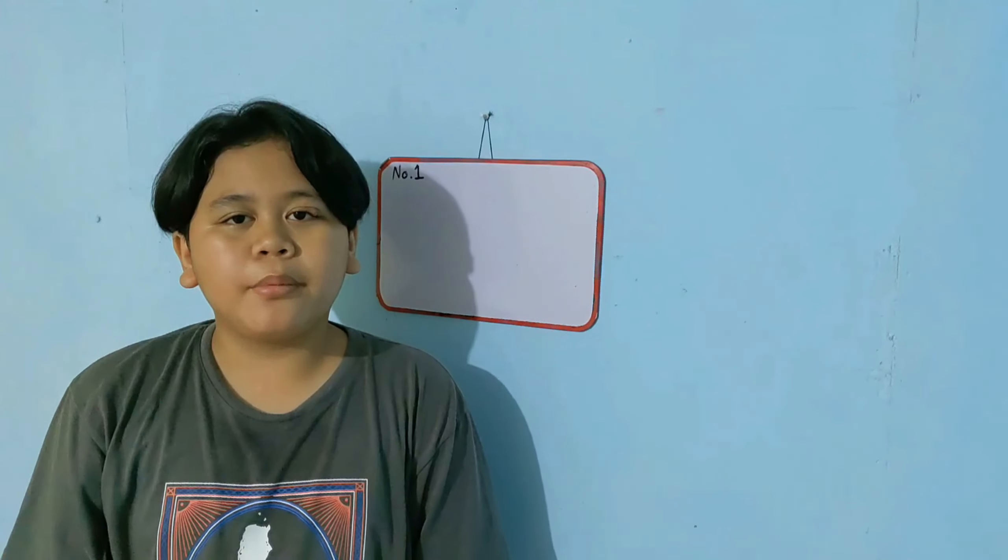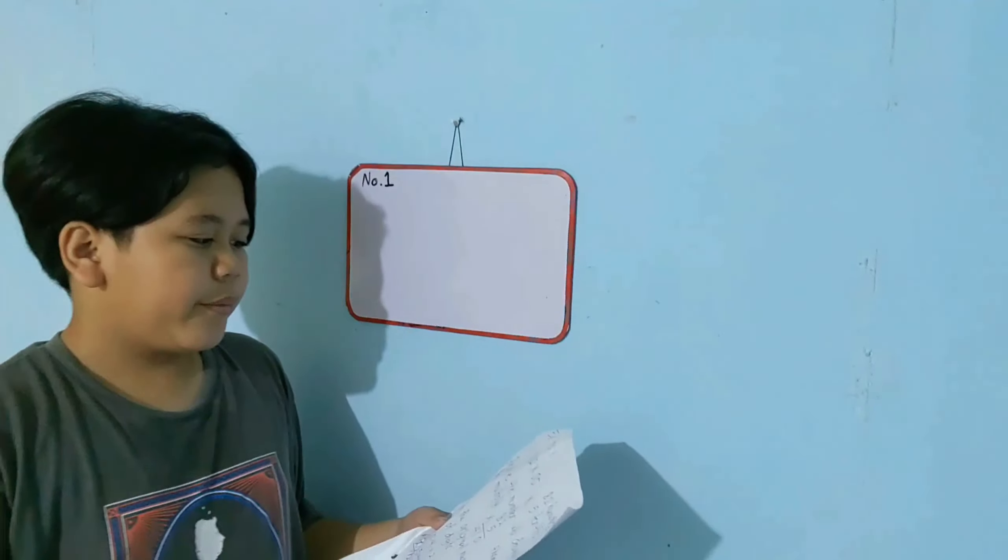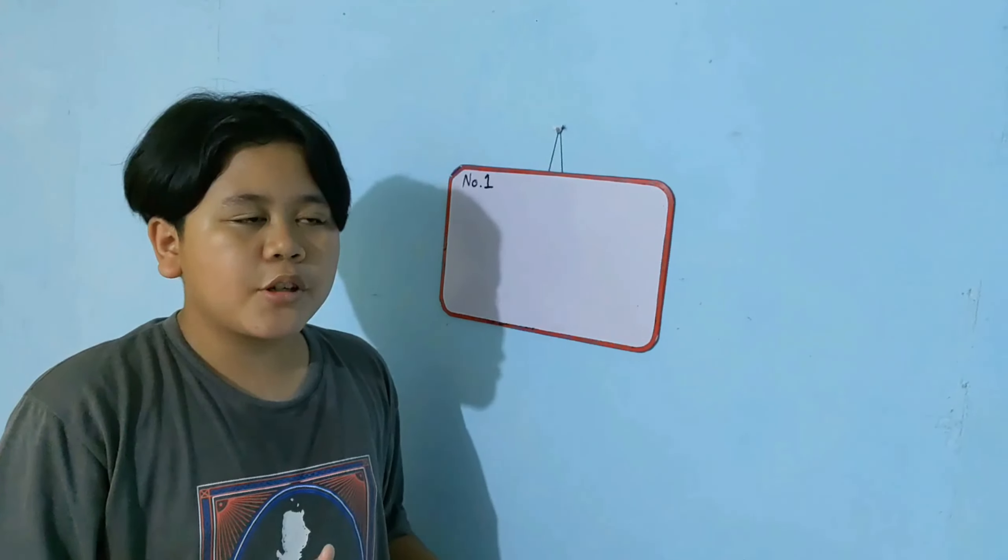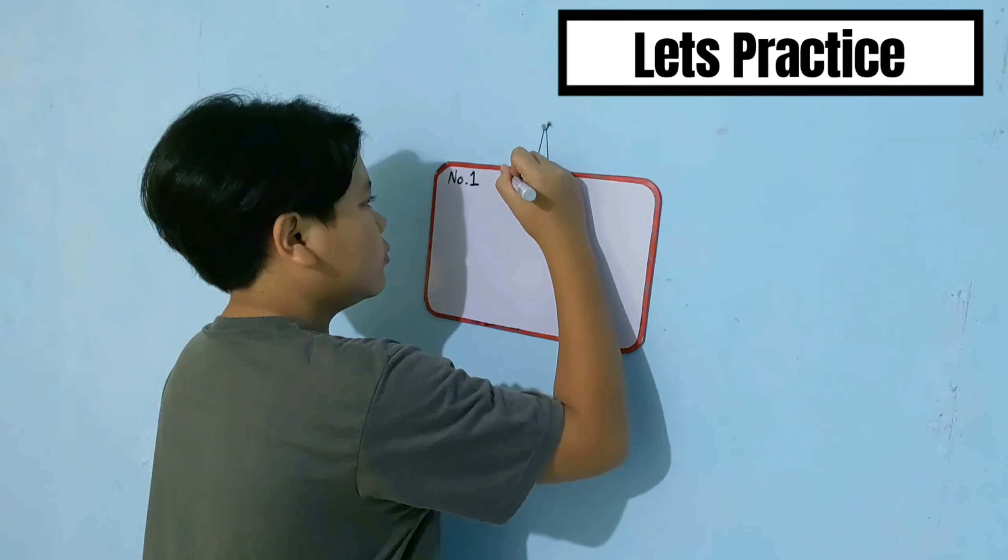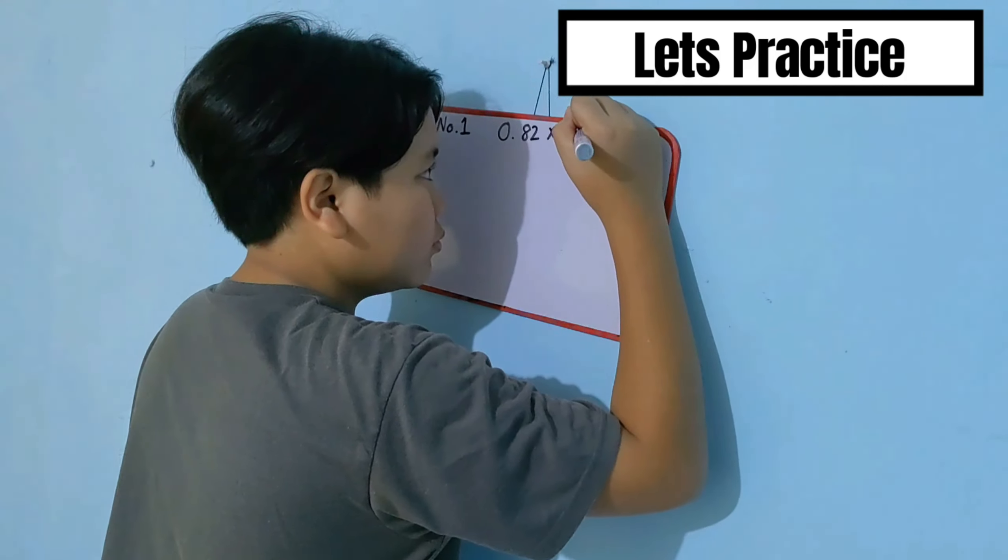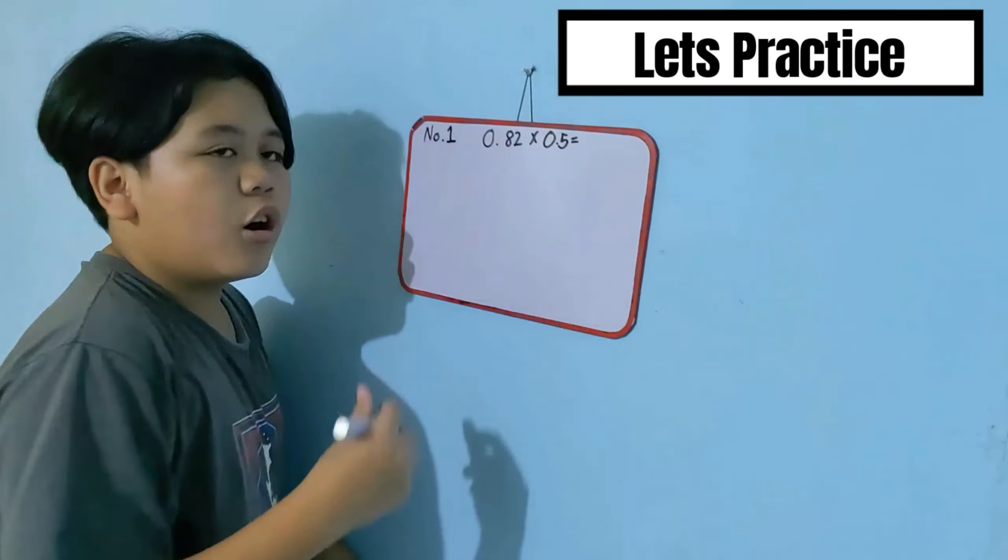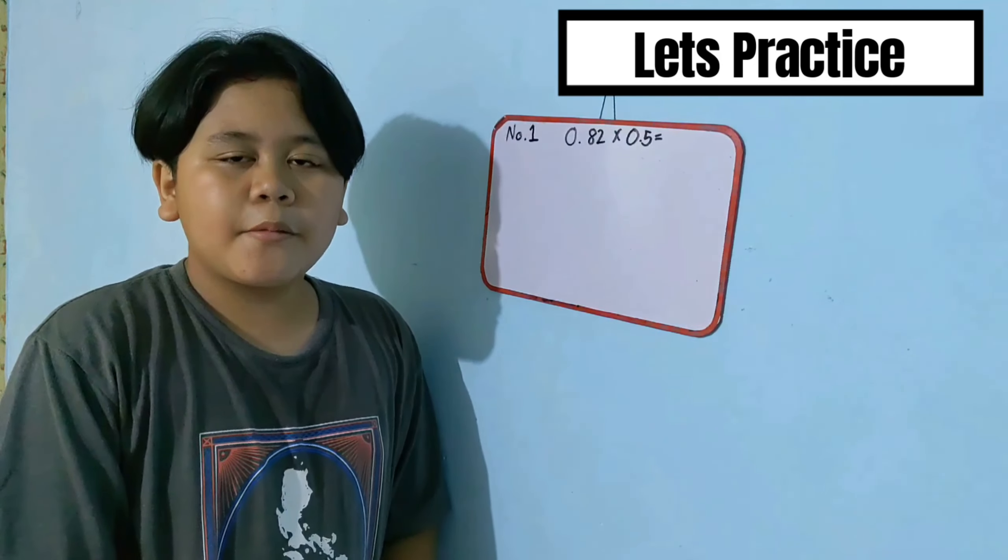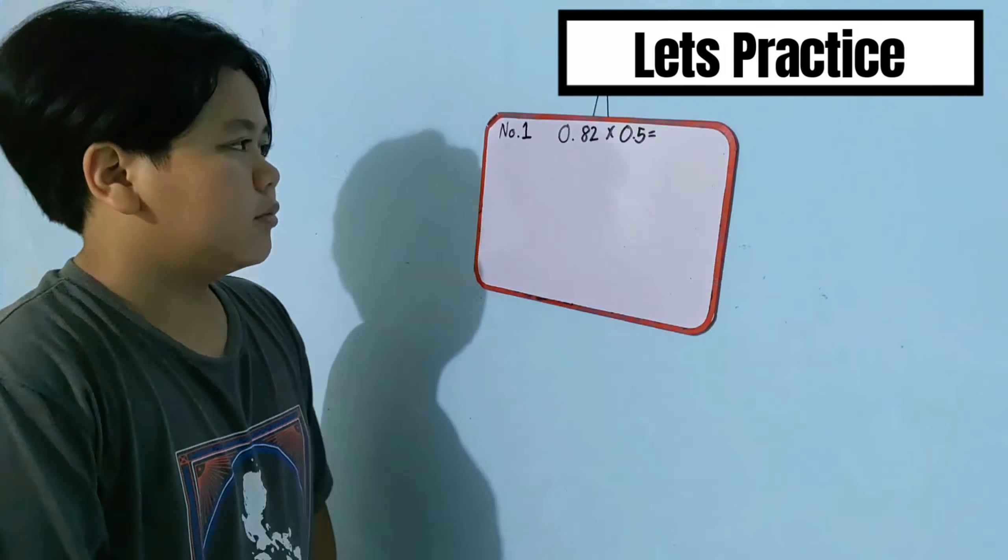Here is an example. 0.82 times 0.5, or 82 hundredths times 5 tenths.